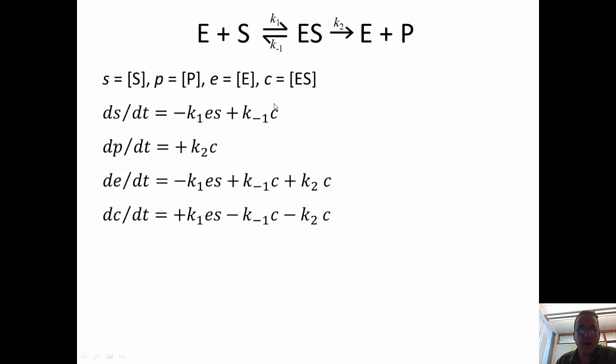So, the more complex there is, then the faster this reverse reaction proceeds. Product can only appear, and it appears via this process, K2 times complex c.